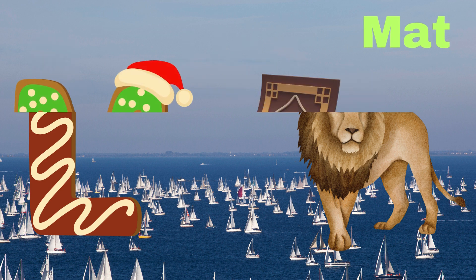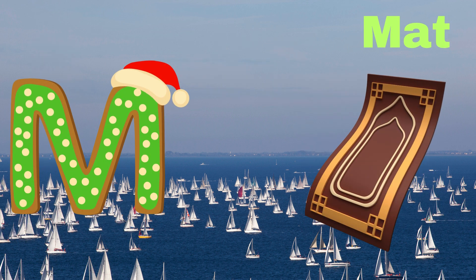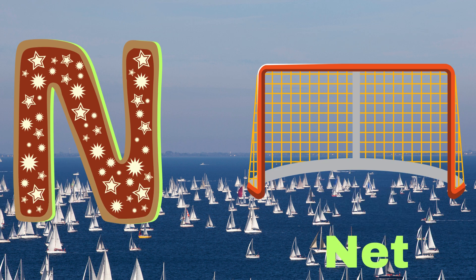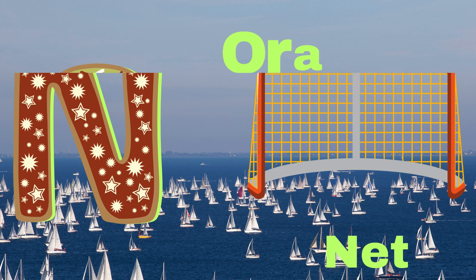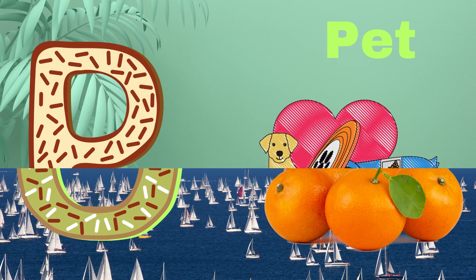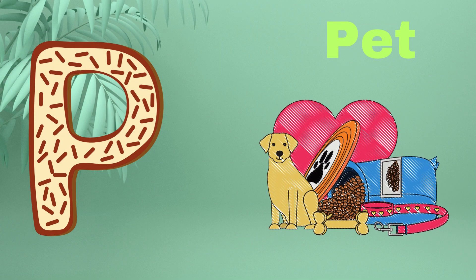M is for mat, m-m-mat. N is for net, n-n-net. O is for orange, o-o-orange. P is for pet, p-p-pet.